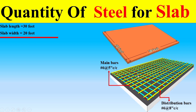Dear students, if we talk about the main bars in this slab, it is shown here that the main bars are Number 6 bars and their center-to-center spacing is 5 inches. Along with this, the distribution bars are also Number 6 bars and their center-to-center spacing is 8 inches.